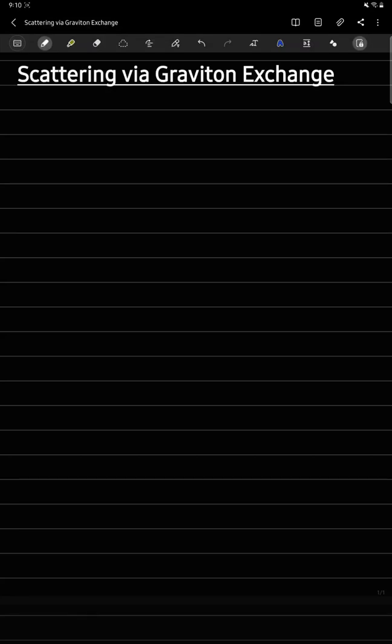Last time we derived Feynman rules for gravity. Today, as an illustration of implementing Feynman rules, I'm going to compute the scattering of two scalar particles via single graviton exchange.